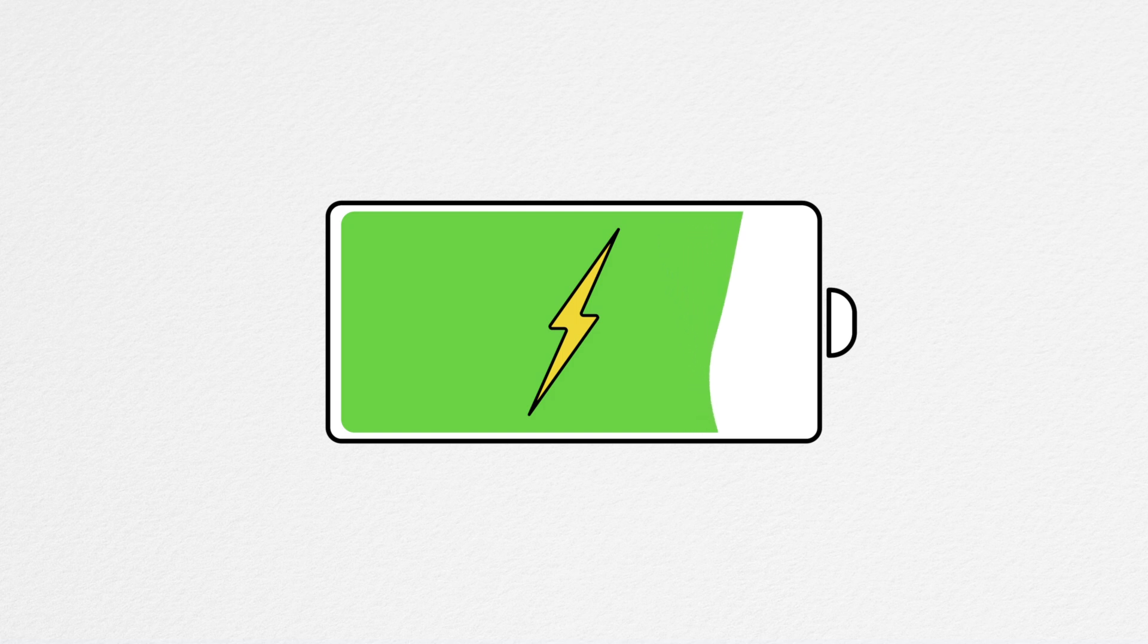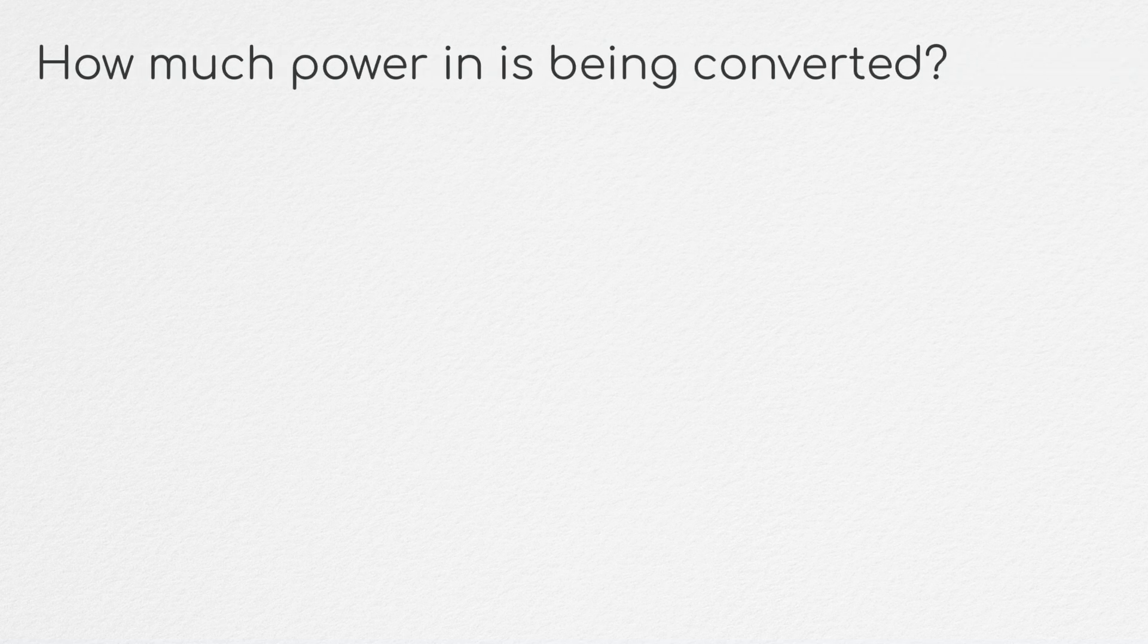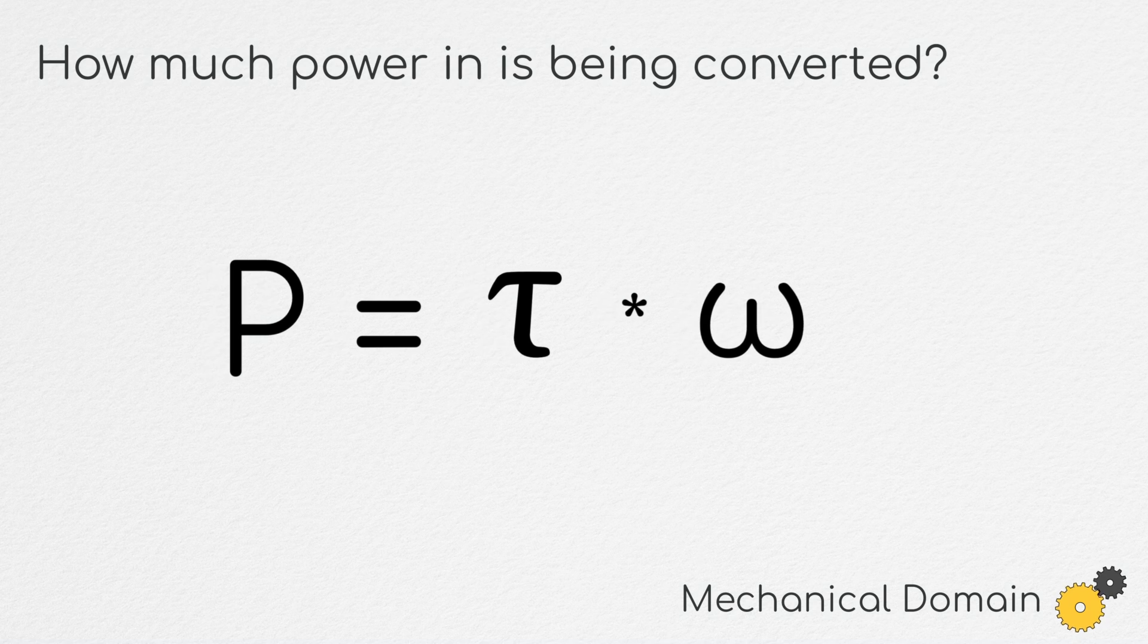But let's do some analysis and try to quantify this a bit. First off, how much of the power into the system is being converted into electrical energy? Well, we know that the mechanical power in a rotational system is equal to the torque times the angular velocity. So the power flowing into the motor system from the external world will be equal to the rotation rate of the motor multiplied by the torque.